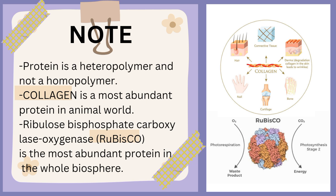Collagen is the most abundant protein in the animal world — nails, cartilage, hair, skin, and connective tissues are all formed of collagen. Ribulose bisphosphate carboxylase oxygenase, or RuBisCO in short, is the most abundant protein in the whole biosphere and takes part in photorespiration and photosynthesis.